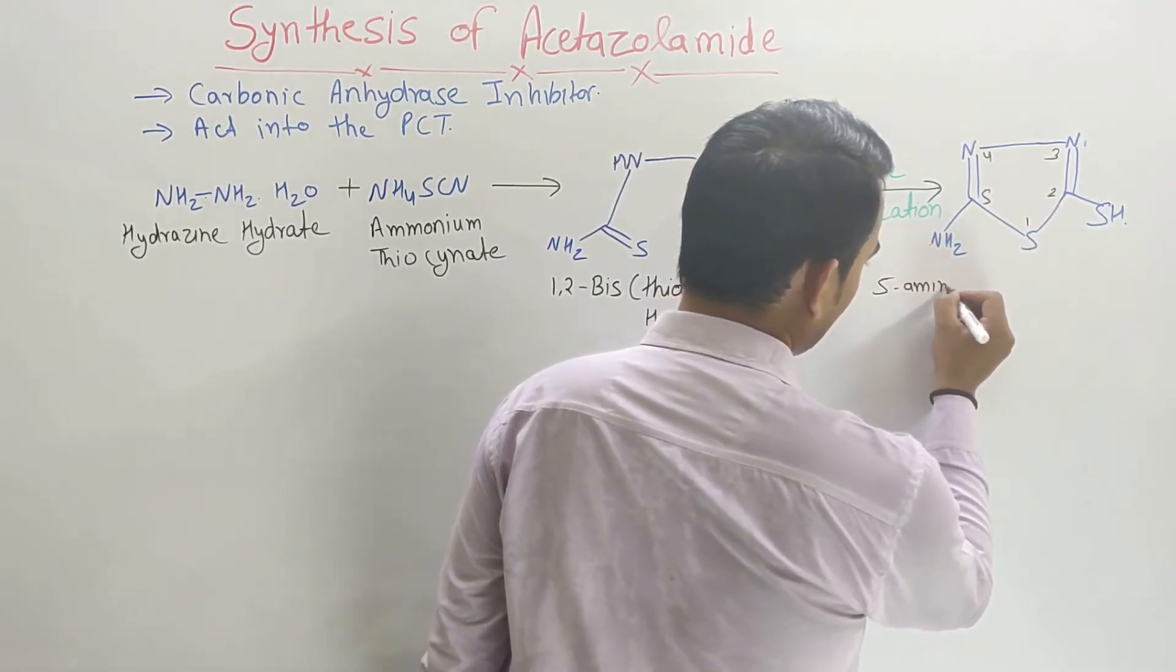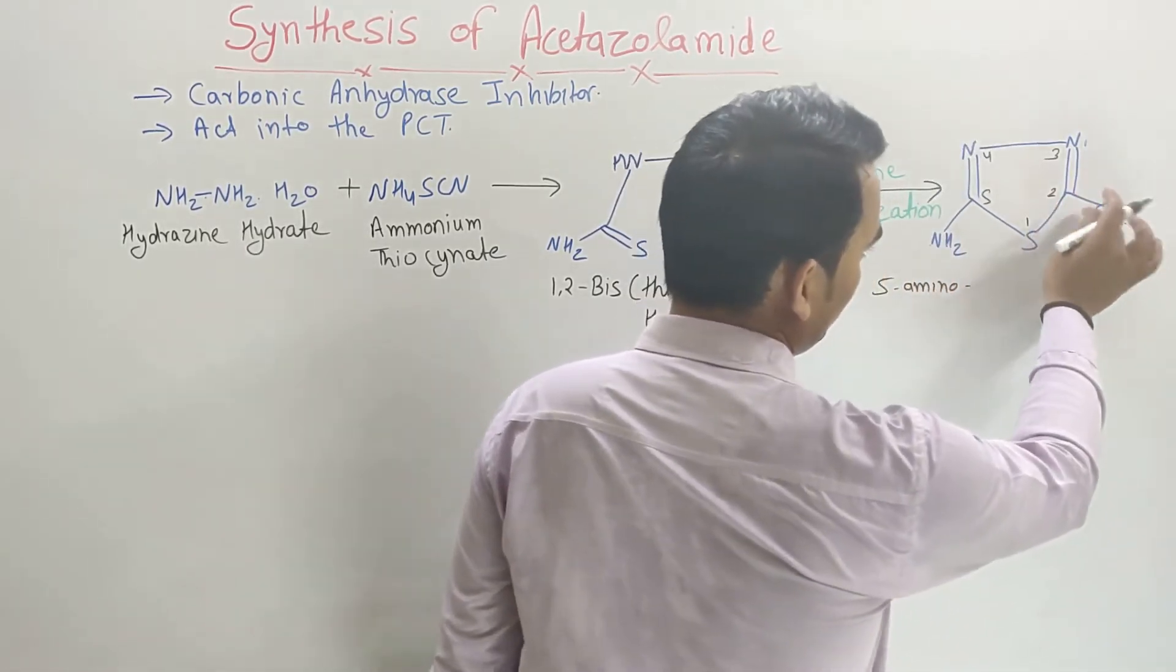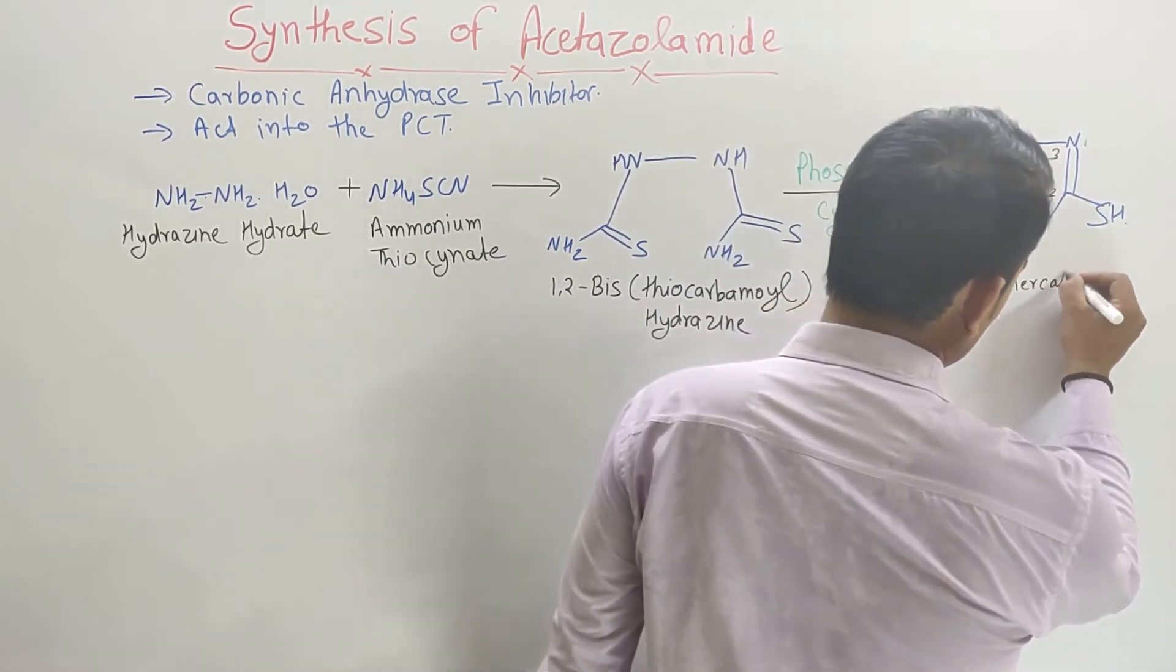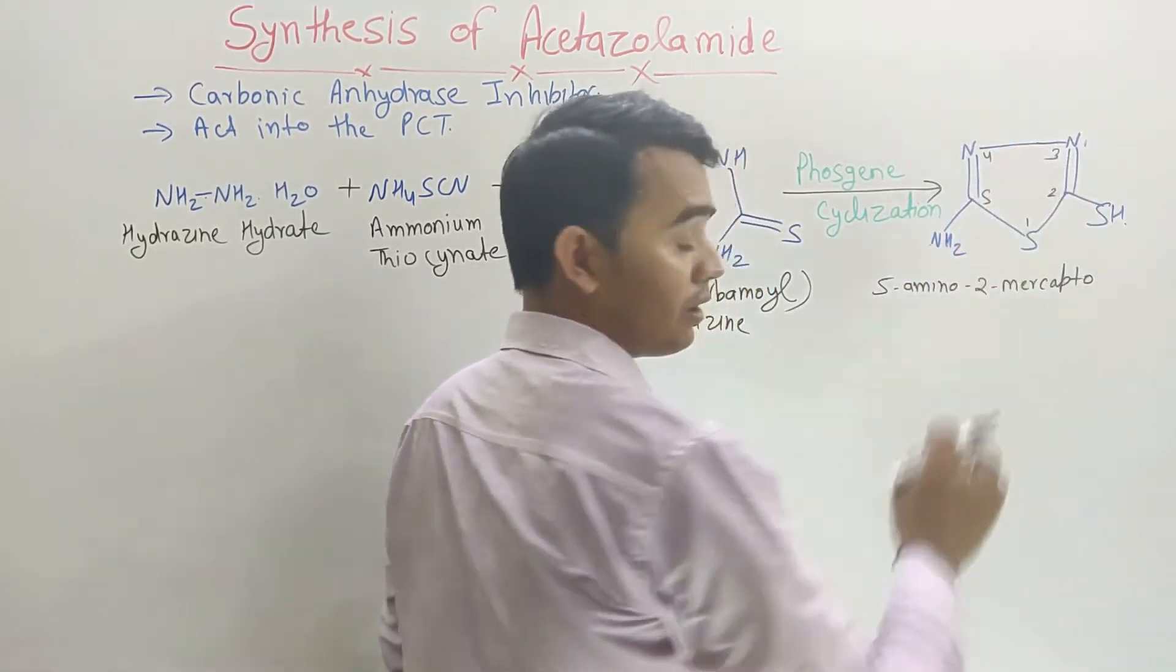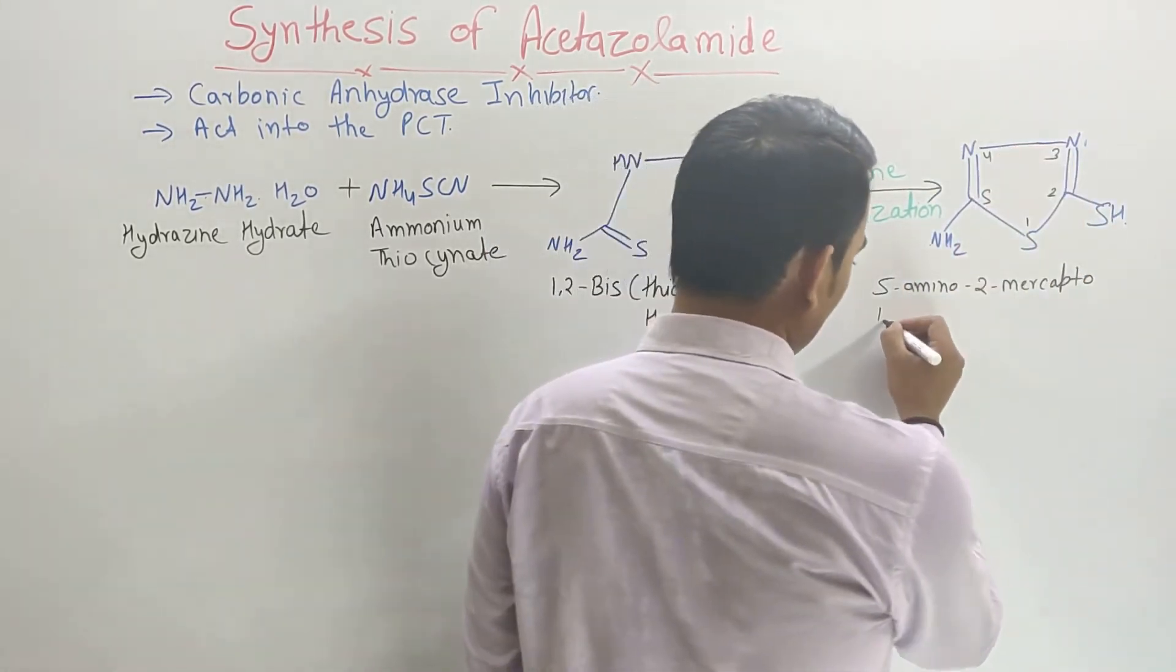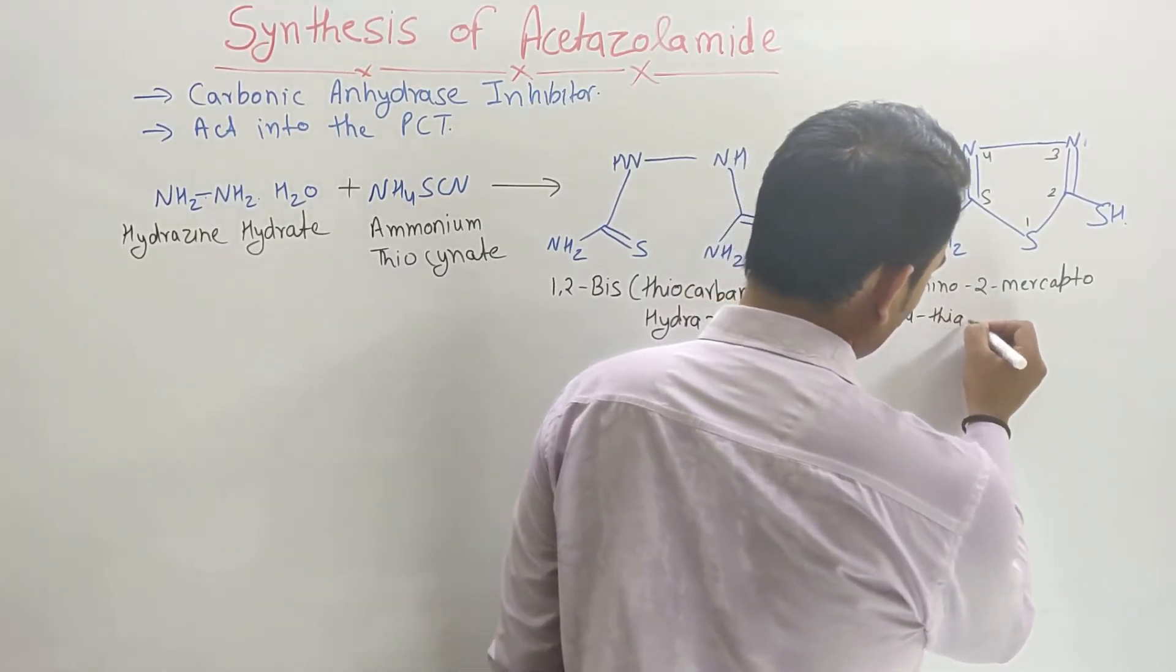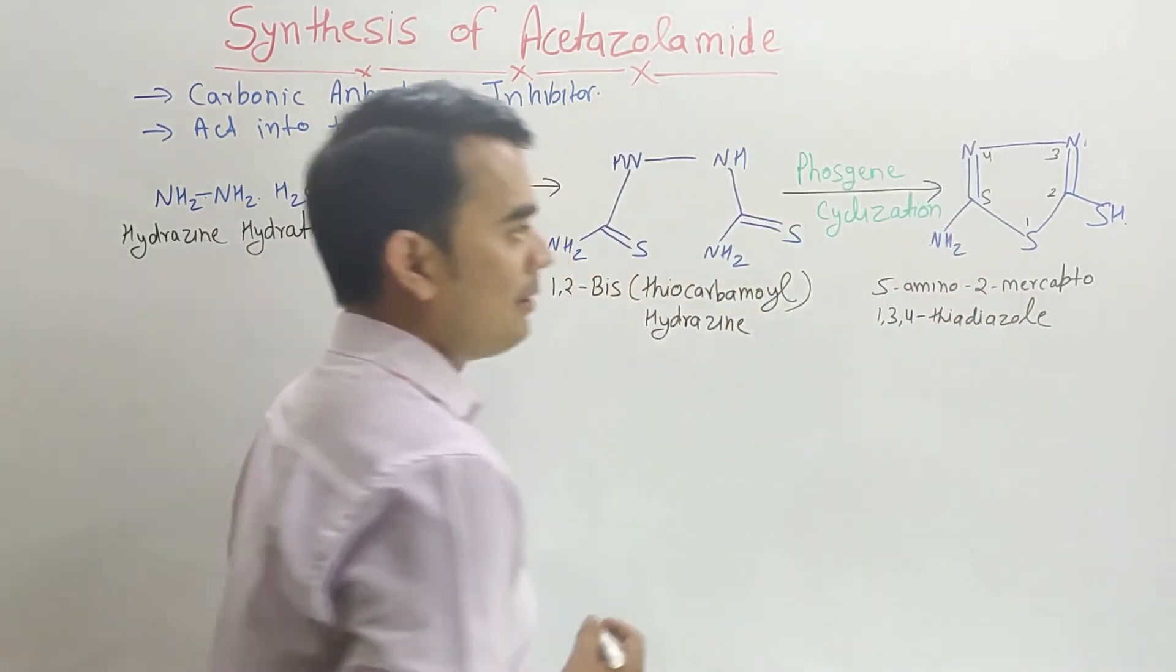So this is 5-amino-2-mercapto-1,3,4-thiadiazole. This intermediate form.